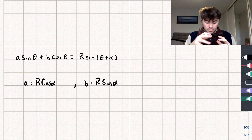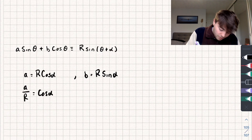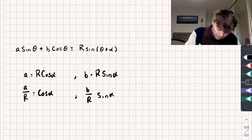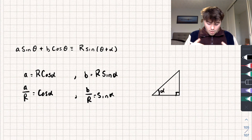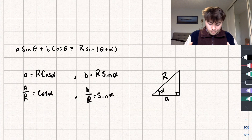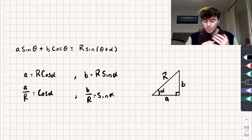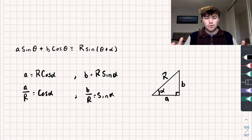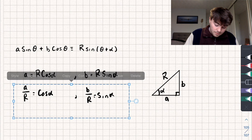Can we actually represent any two positive numbers A and B in terms of R cosα and R sinα? Yes — if we divide both sides by R we get A/R = cosα and B/R = sinα. Drawing a right-angle triangle with angle alpha, the adjacent side is A, the opposite side is B, and the hypotenuse is R. So for any positive real numbers A and B, we can always form a right-angle triangle with those side lengths, meaning there always exists an R and alpha satisfying these expressions.